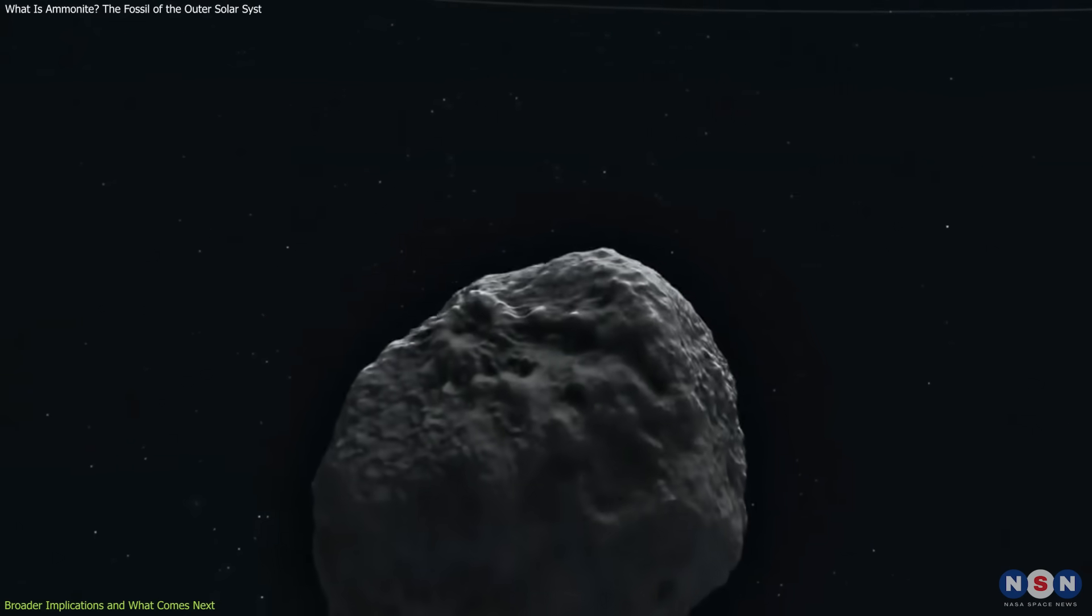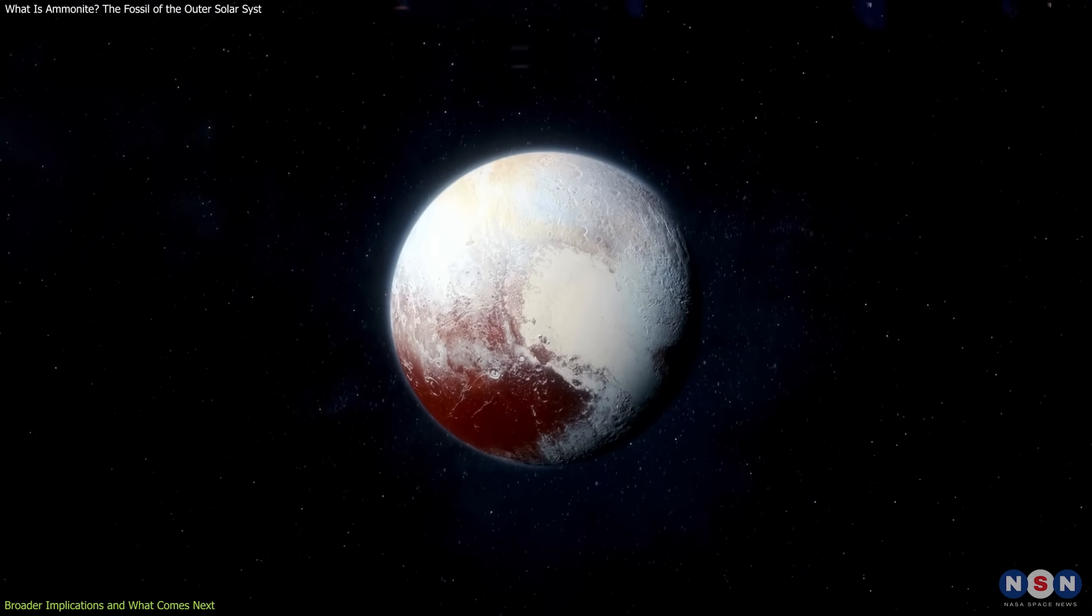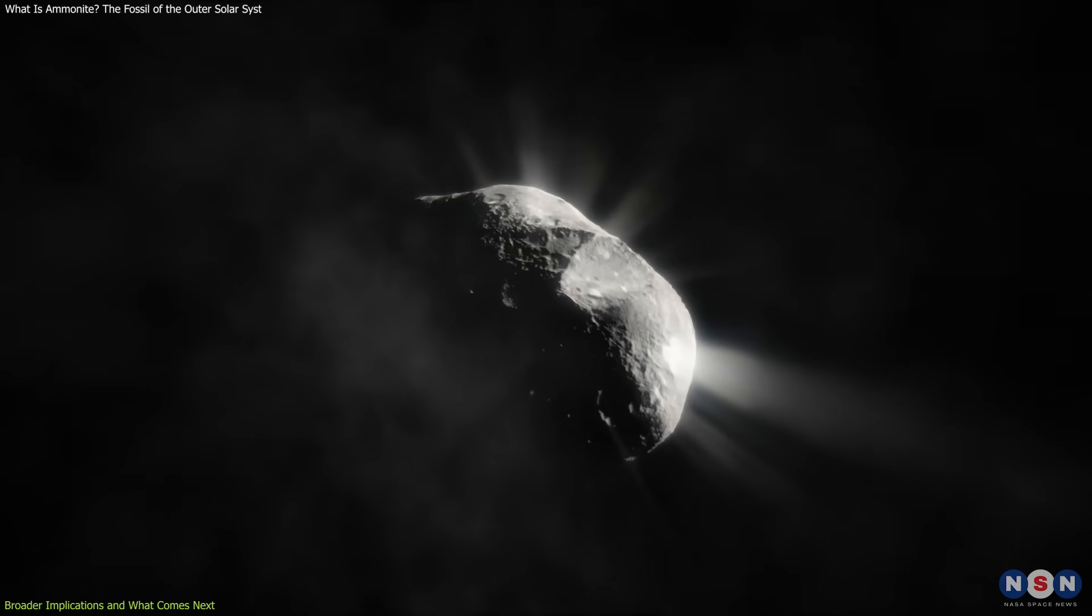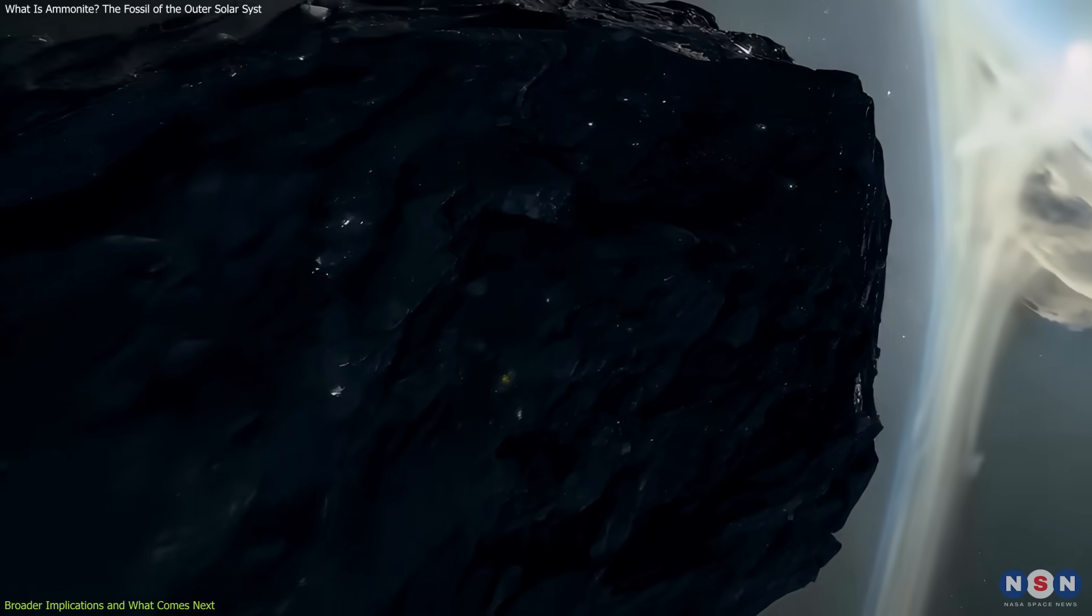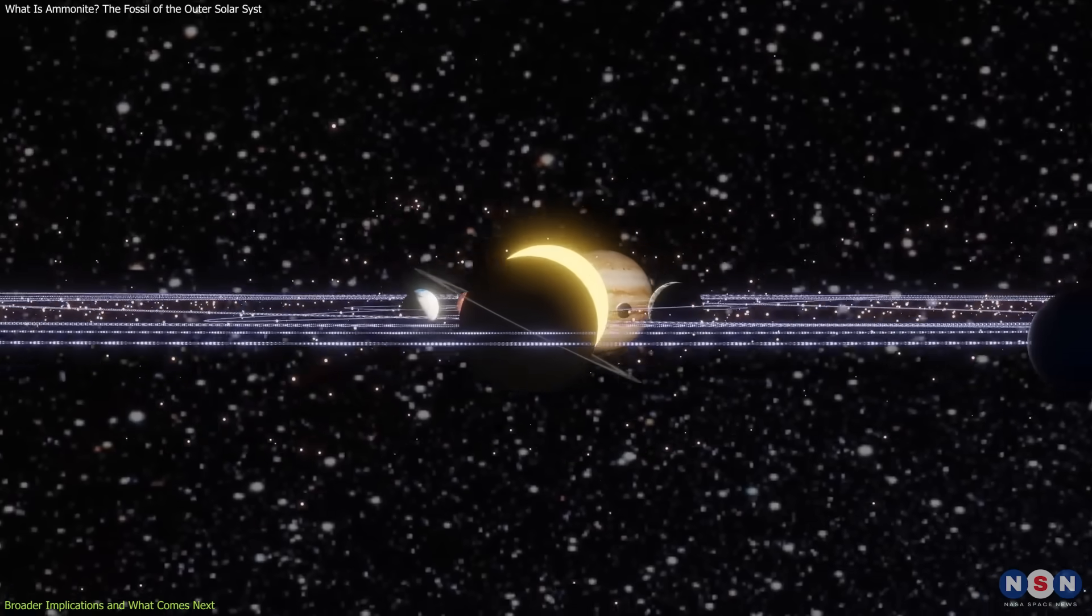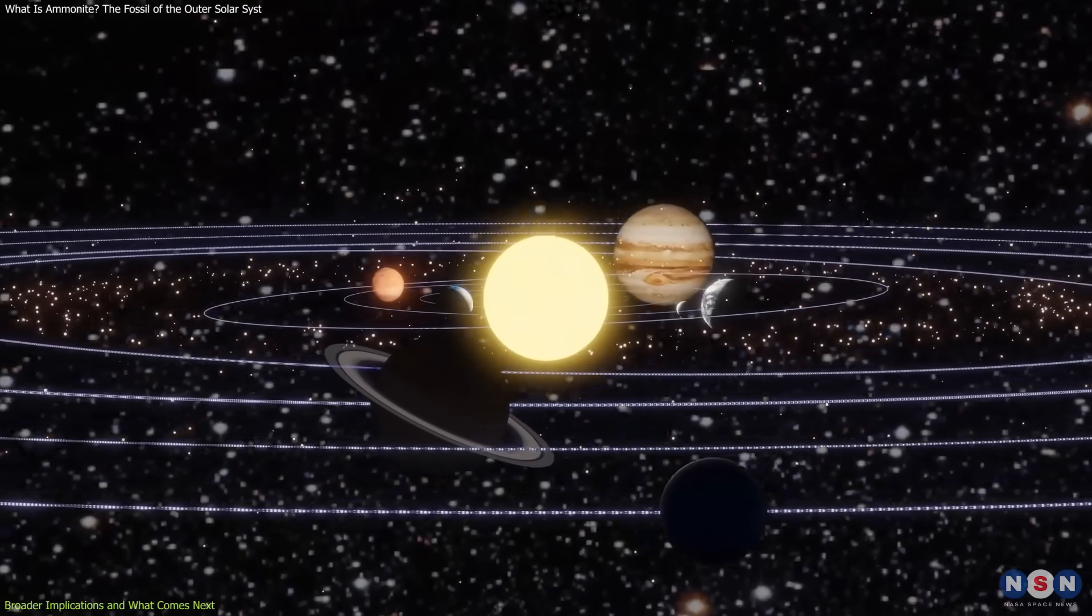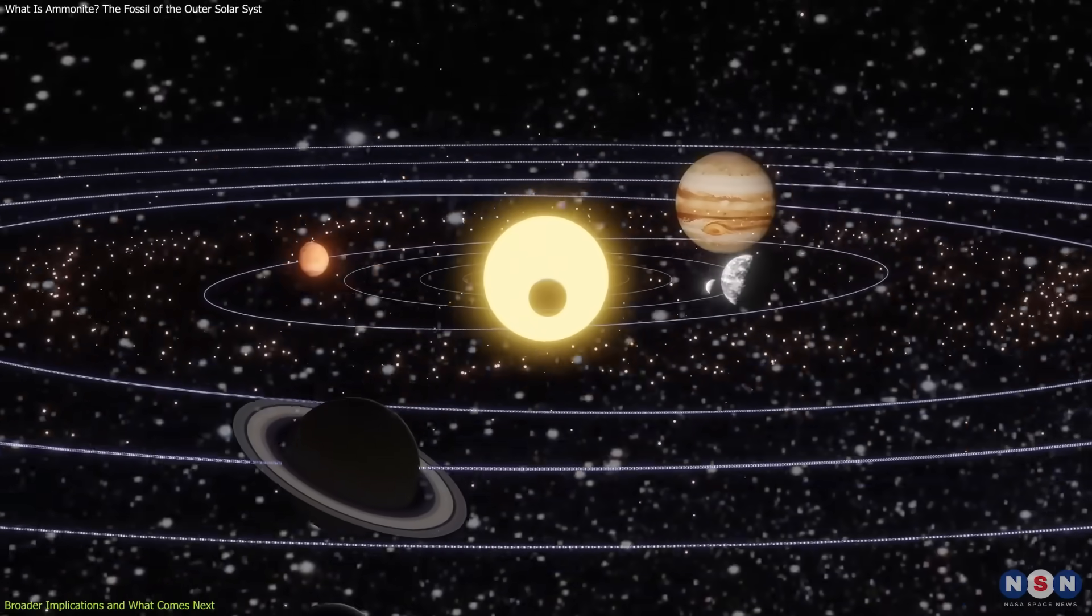Astronomers are eager to uncover its secrets. Is it ice-rich like Pluto? How does it reflect sunlight? Its composition could reveal whether it formed here or was pulled from another region. Every discovery helps us understand the true nature of our solar system's evolution.